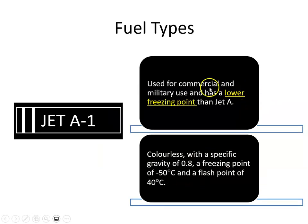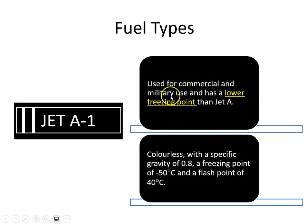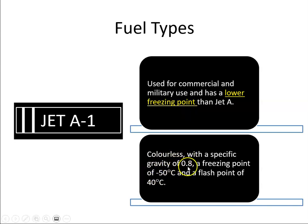Jet A1 is ubiquitous — it's everywhere around the world, very commonly used in commercial and military aviation. It has a lower freezing point, so aircraft can fly higher. It is also colourless with a specific gravity of 0.8, a freezing point of minus 50 degrees Celsius, and a flash point of 40 degrees Celsius.